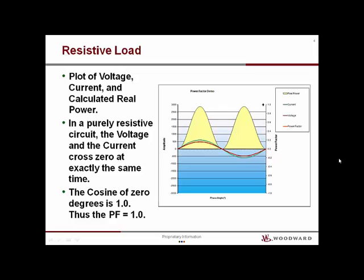This plot of voltage, current, and calculated real power is an AC generator with a purely resistive load. Notice that the voltage and the current cross zero at exactly the same time. Since the phase difference of the current and the voltage is zero, the cosine of zero equals 1.0, or unity power factor.